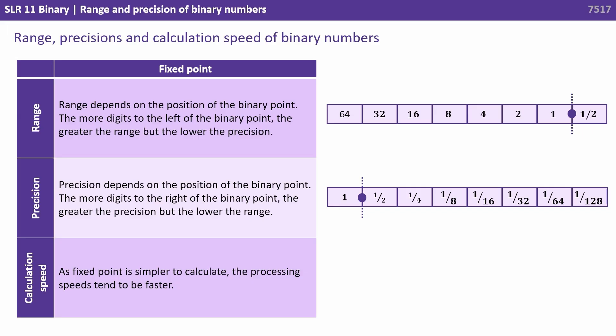In terms of calculation speed, a fixed point number is simpler to calculate, and the processing speeds tend to be faster.